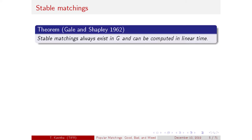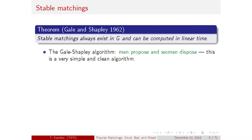A classical result of Gale and Shapley from 1962 states that stable matchings always exist in a marriage instance with strict preferences and can be efficiently computed. The algorithm is as simple and clean as it gets — it can be described in five words: men propose and women dispose.